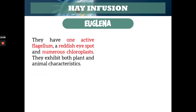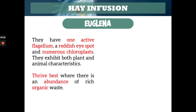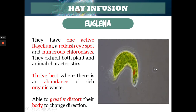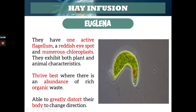Next, we have euglena. For euglena, it's a flagellate — it has only one flagellum, a reddish eye spot, and numerous chloroplasts. They have both plant and animal characteristics. Since it has a lot of chloroplasts, it plays a role in photosynthesis and can produce oxygen. It thrives best where there is an abundance of organic waste, and it's able to greatly distort its body to change direction. This is a picture of euglena — you can see the reddish eye spot, the green chloroplasts, and the one flagellum. It uses the flagellum for motion.